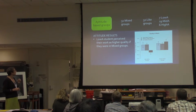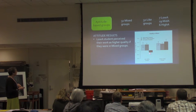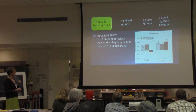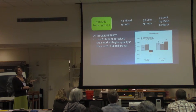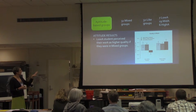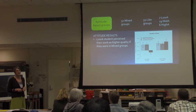The attitude results strongly supported the content results. Low aptitude students in like aptitude groups perceived their work as being very low quality, whereas those in mixed groups perceived their work as very high quality. Quality of work was one of four factors measured by the attitude survey and the only one that was statistically significant in this part of the study.